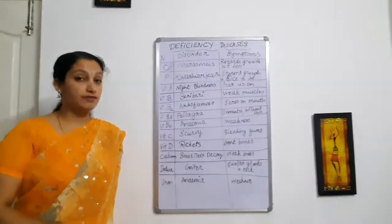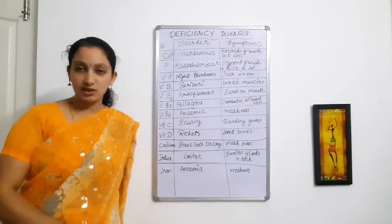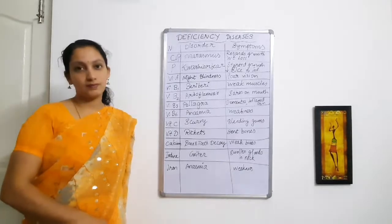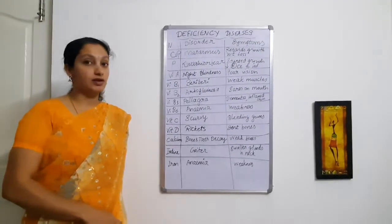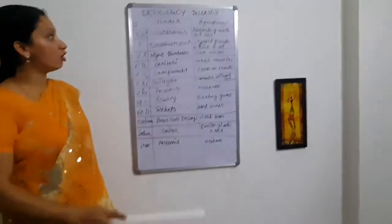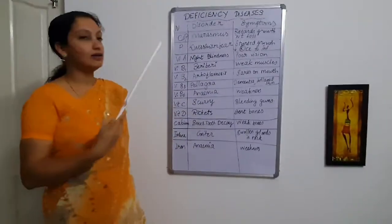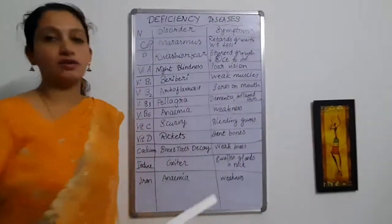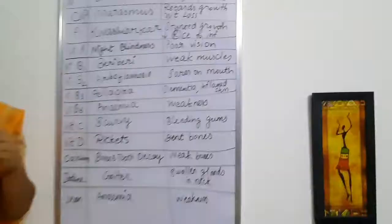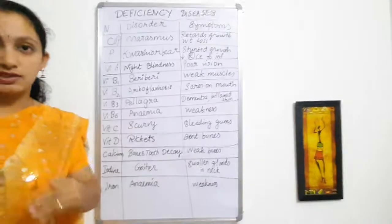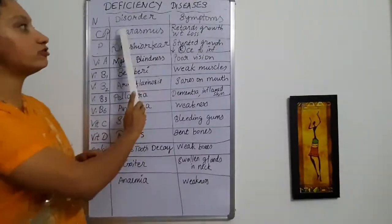There is a specific age group affected with marasmus — that is babies below 1 year old. The baby has a deficiency of carbohydrates and proteins. The symptoms are retarded growth, meaning less growth — the baby is not growing fast — and weight loss, meaning the weight is decreasing. So these are the symptoms of marasmus.